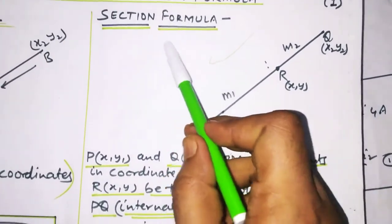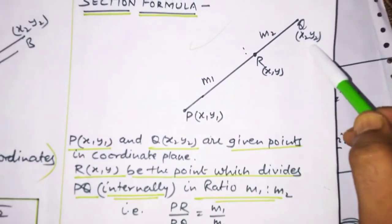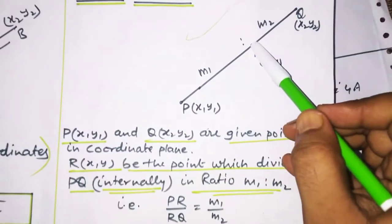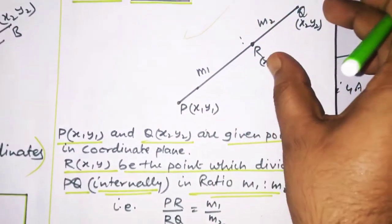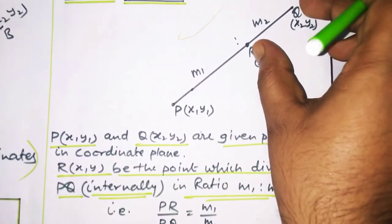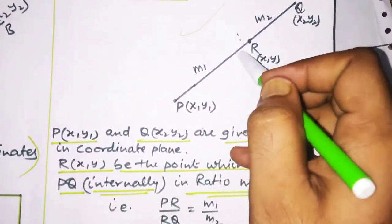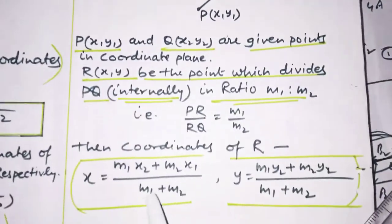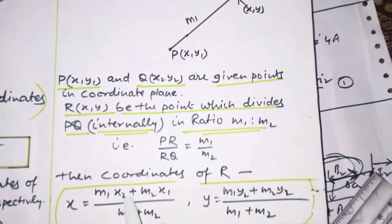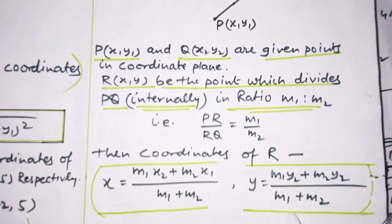Now I am going to talk about section formula. What is section formula? Suppose do points aapko diye hain, dono ke coordinates aapko pata hai: x1, y1 aur x2, y2. Koi ek point R liya gaya inke beech mein. Maan lijiye yeh R, P aur Q ko M1 ratio M2 mein divide karta hai — yeh internally divide kar raha hai. Tab aapka section formula: x = (M1·x2 + M2·x1) / (M1 + M2), y = (M1·y2 + M2·y1) / (M1 + M2).